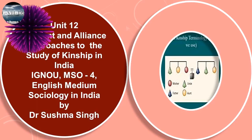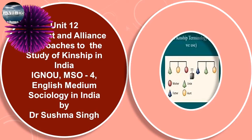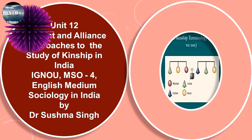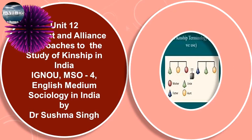Kinship terms can also be divided into two types. One type covers the terms of address — these are kinship terms used when people address each other. Then there are terms used for referring to a particular relationship, known as terms of reference. Sometimes the two types may be expressed by one term only.